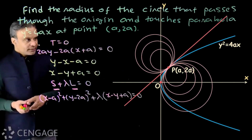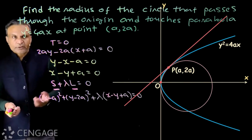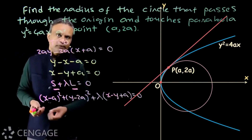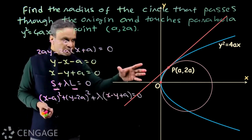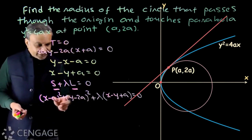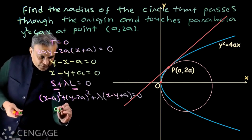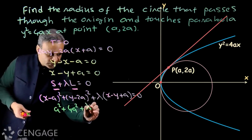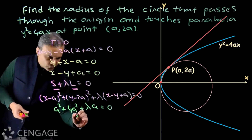We want the member of the family that passes through the origin, which requires one particular value of λ. To find that value, we substitute x = 0 and y = 0 into the equation. We get: a² + 4a² + λ(a) = 0.